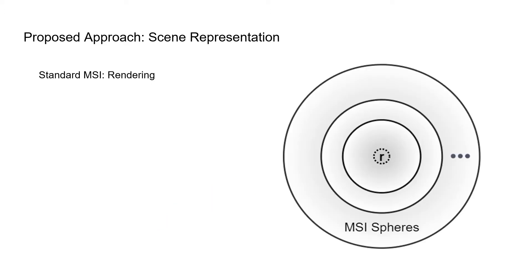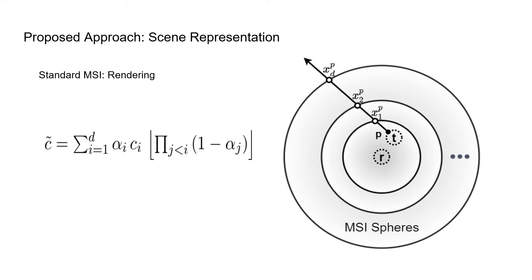Given an MSI representation of a scene, the color value of a pixel P at a target view T is computed as follows. First, we cast a ray through pixel P into the scene. Compute ray-sphere intersection points. The target pixel's color values are calculated by back-to-front alpha compositing the color and opacity values at the ray-sphere intersection points.